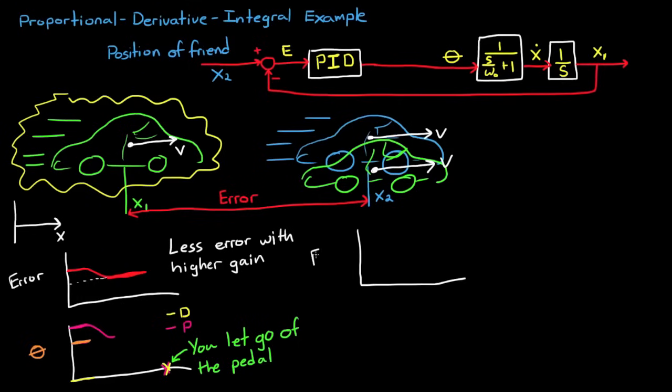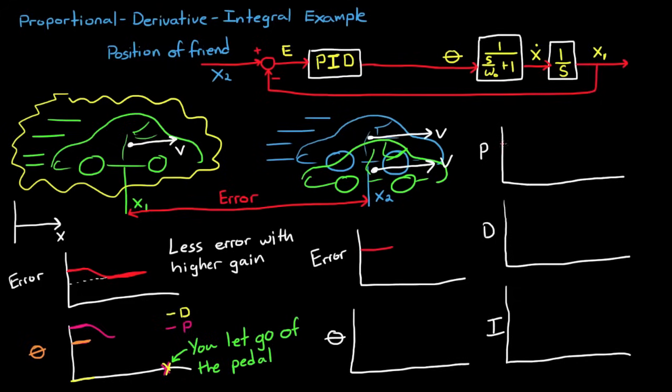Now this is where the integral path comes in handy to remove steady state errors. When you are trailing behind your friend and the error is constant the integral path will slowly build up error adding more and more pedal to the output. It works like this. The error starts out constant just like it was before. And just like before you're holding the pedal exactly where it already is and you're trailing your friend. But since the error term is non-zero the integral path is summing up that error over time and gradually increasing the pedal's position.